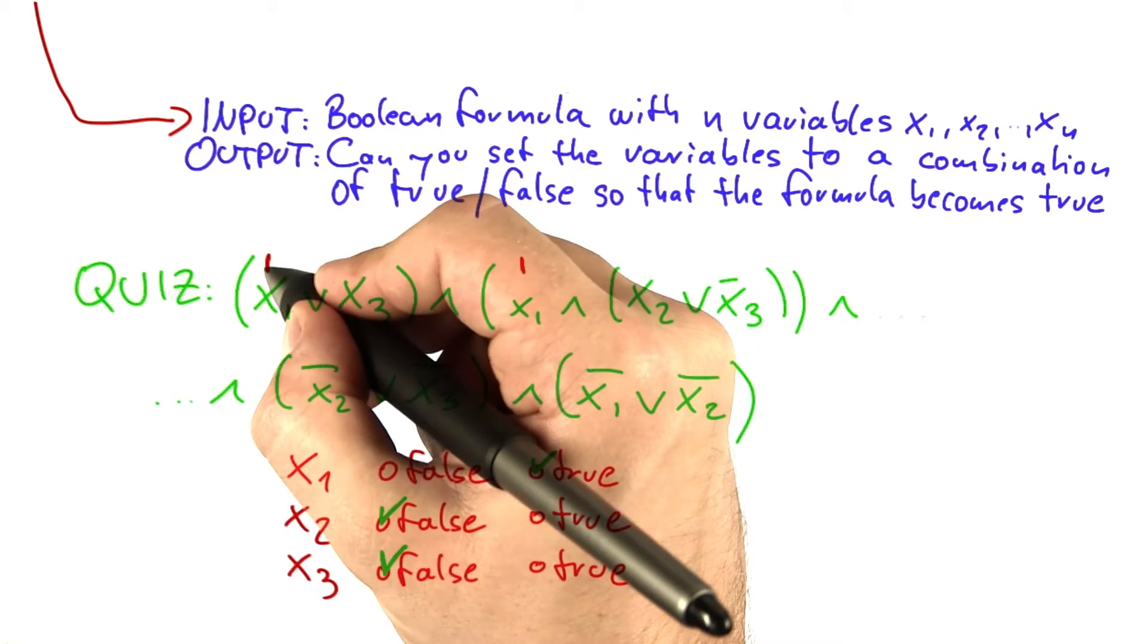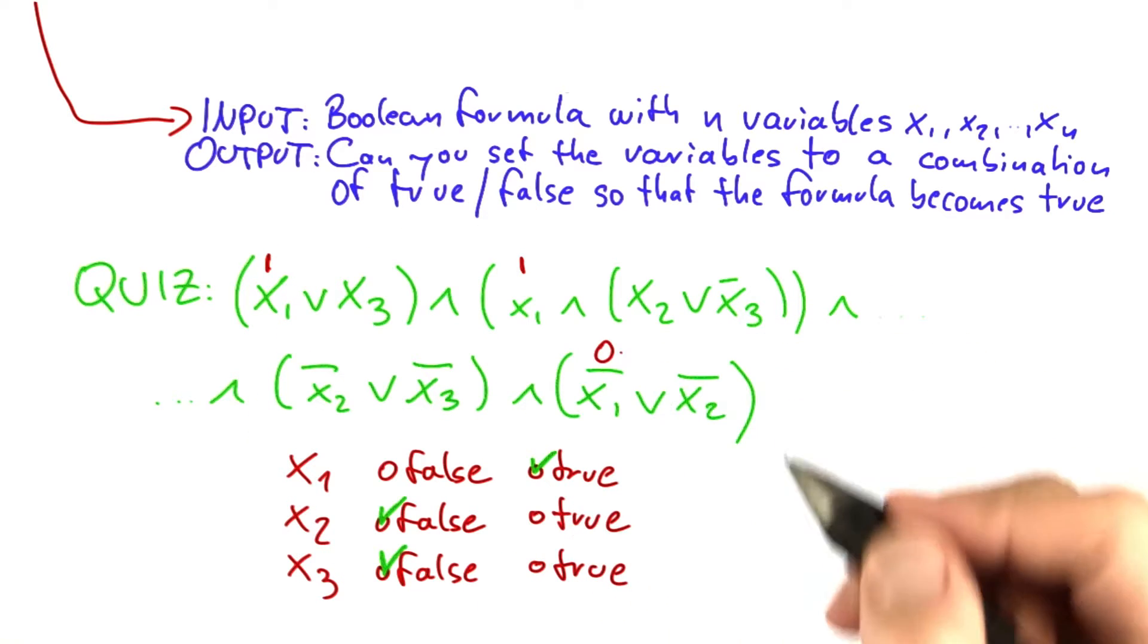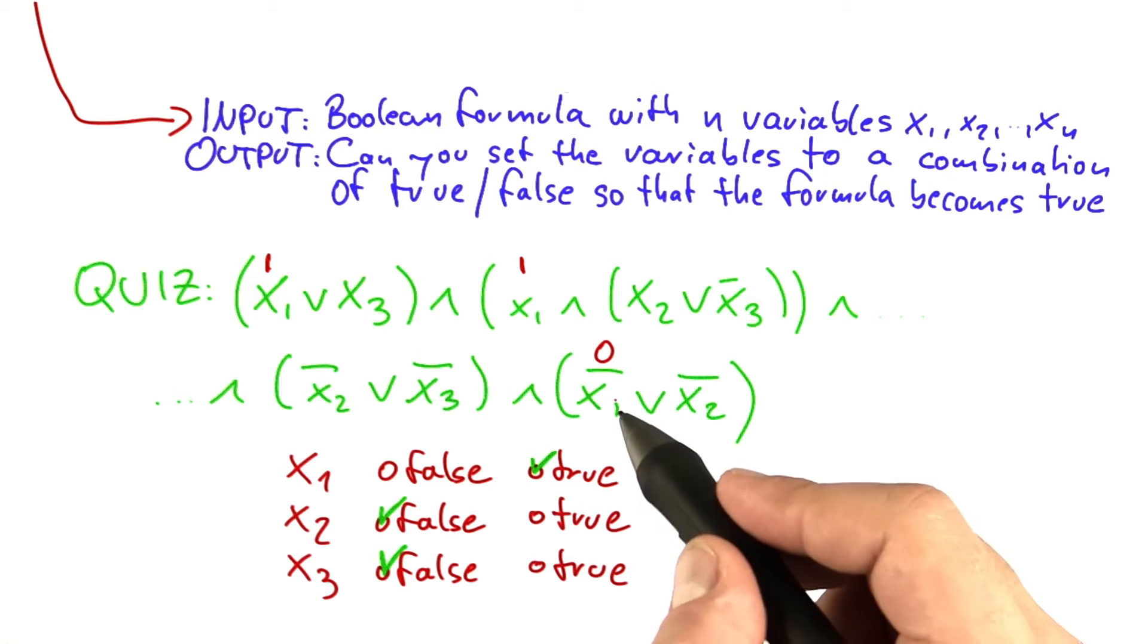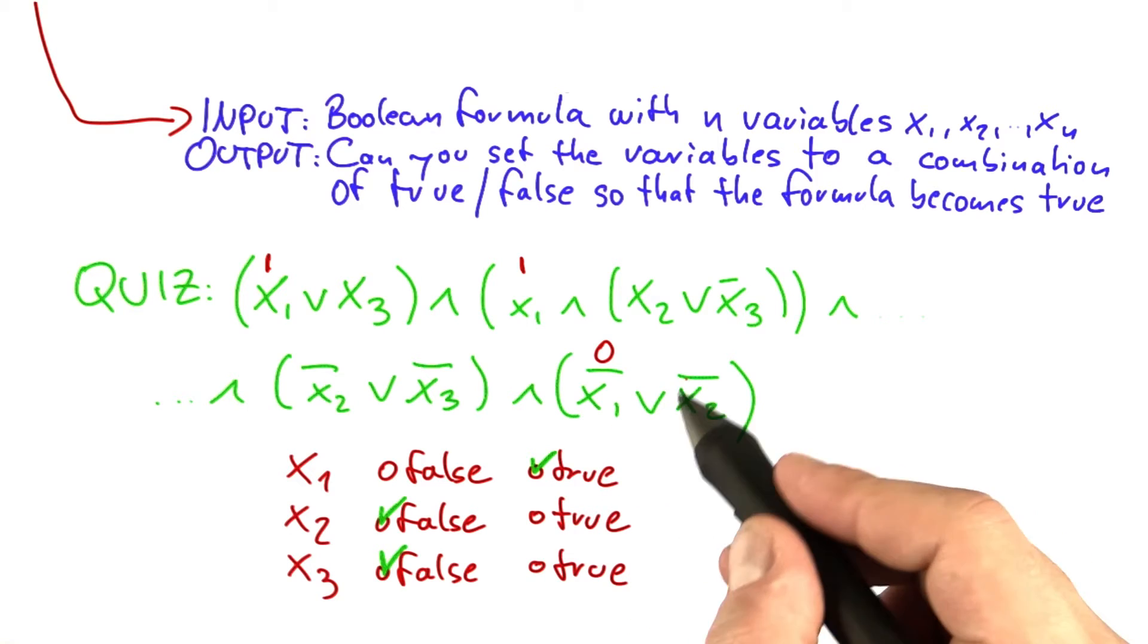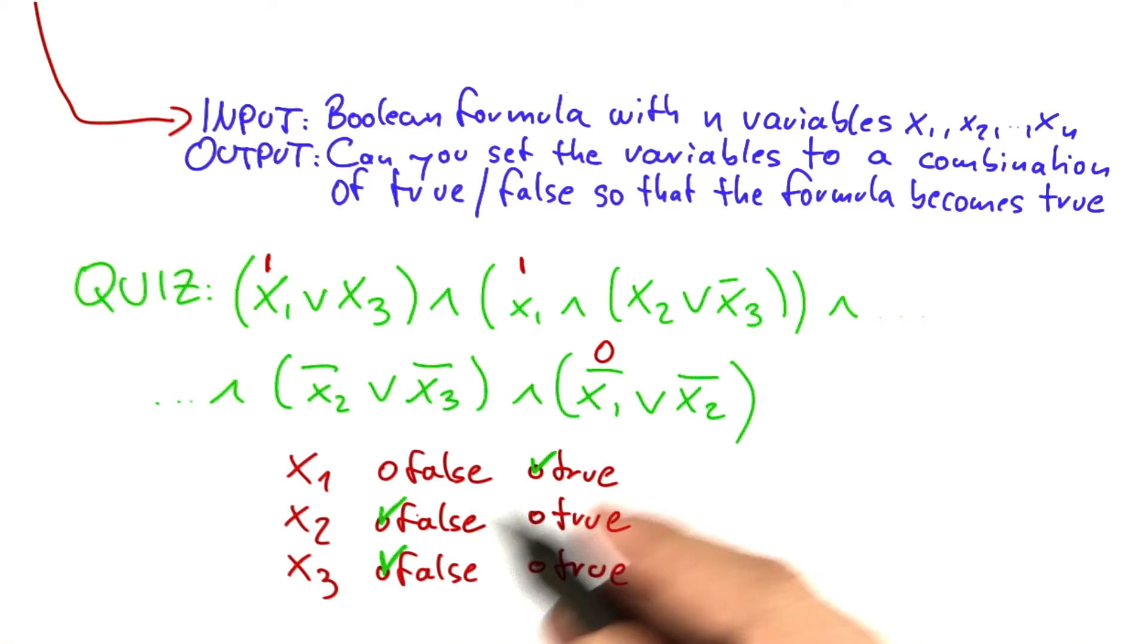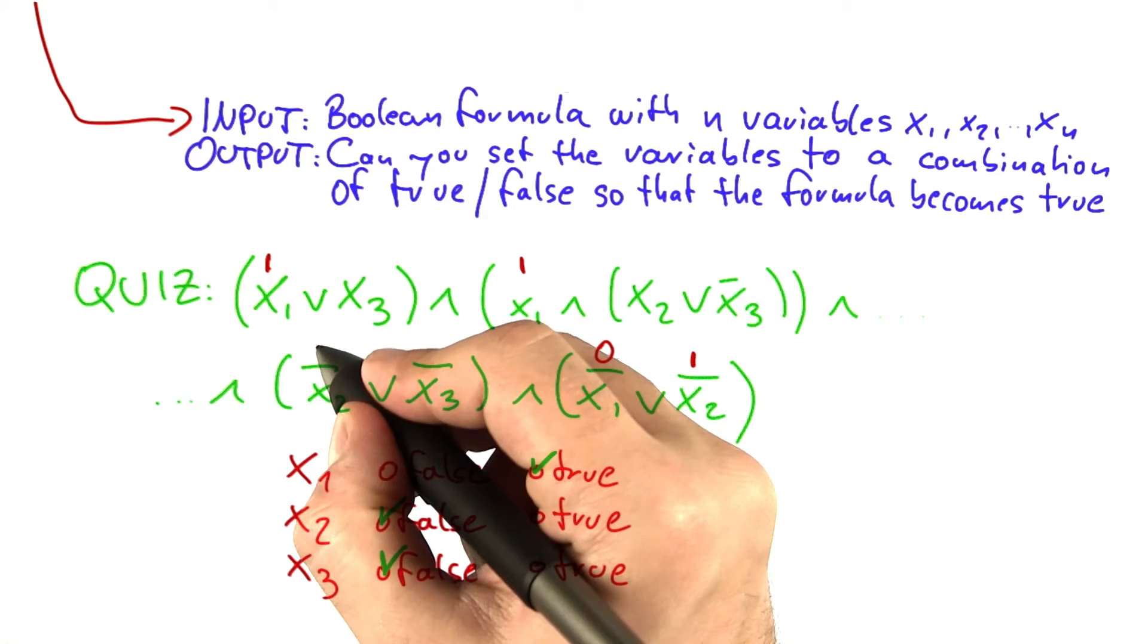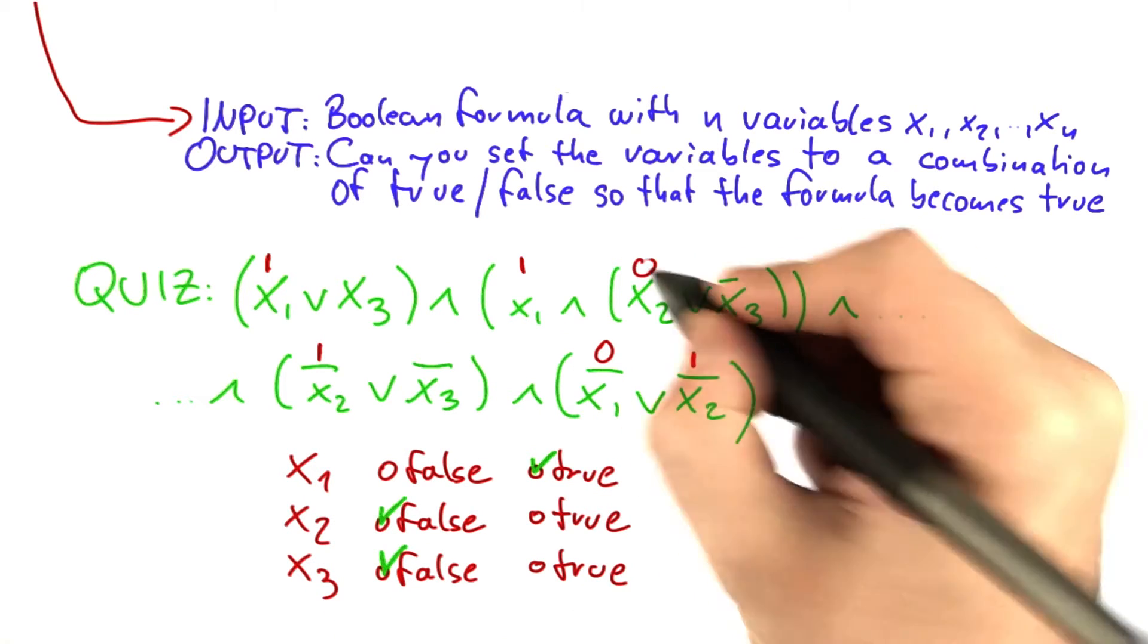which gives us a 1 here and a 0 here also. Now, since we have a 0 here, we must make sure that not x2 evaluates to true, so we have to set it to false. And if we set it to false, we get a 1 here, got a 1 here and a 0 here.